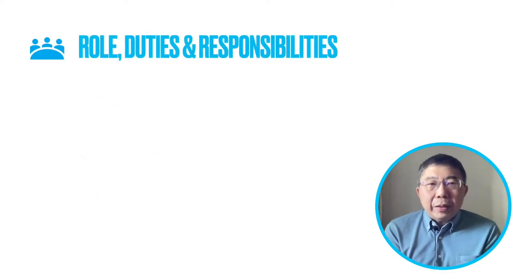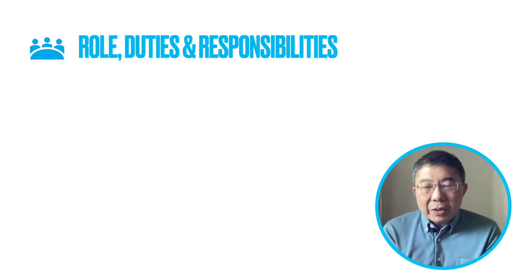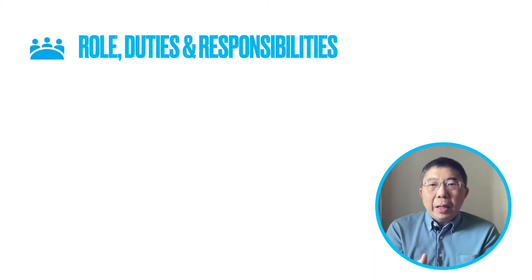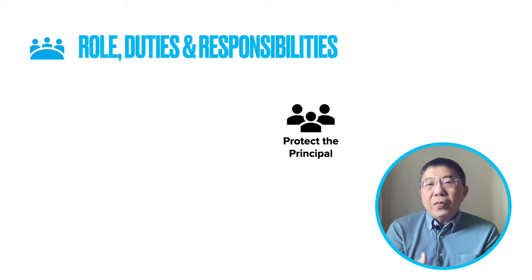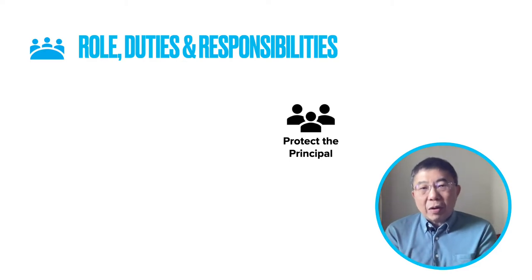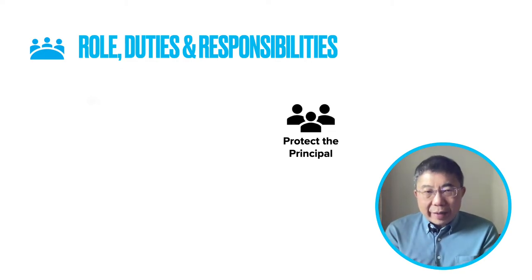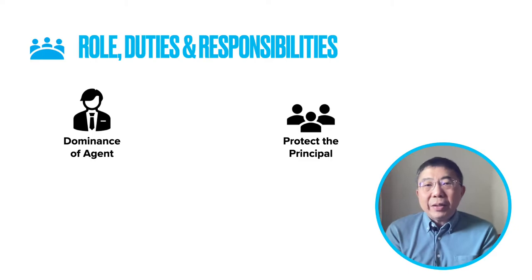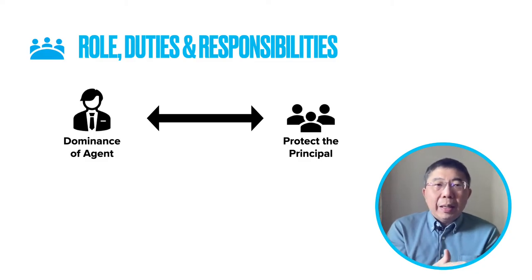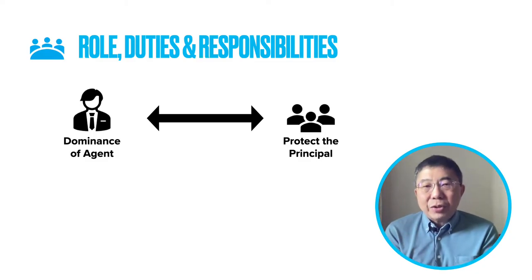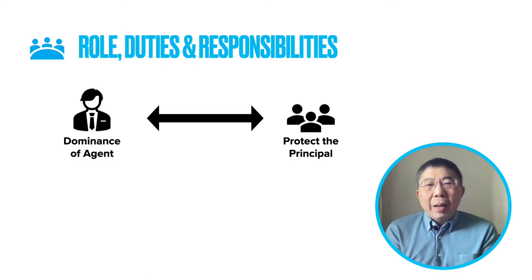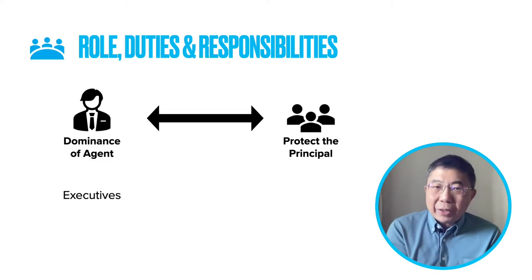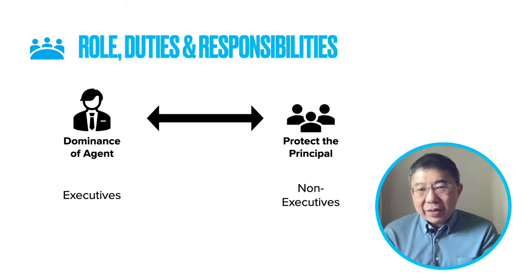Looking at the roles, duties and responsibilities of the board in more detail: the board functions as a monitoring body to oversee the managers and protect the interests of the principals. However, there is a risk that the board may also be dominated by the agents — the management. So there is a tension between the role to protect the interests of the principal and the need to reduce the dominance of the agent, which is addressed through the appointment of executives versus non-executive directors within the board.